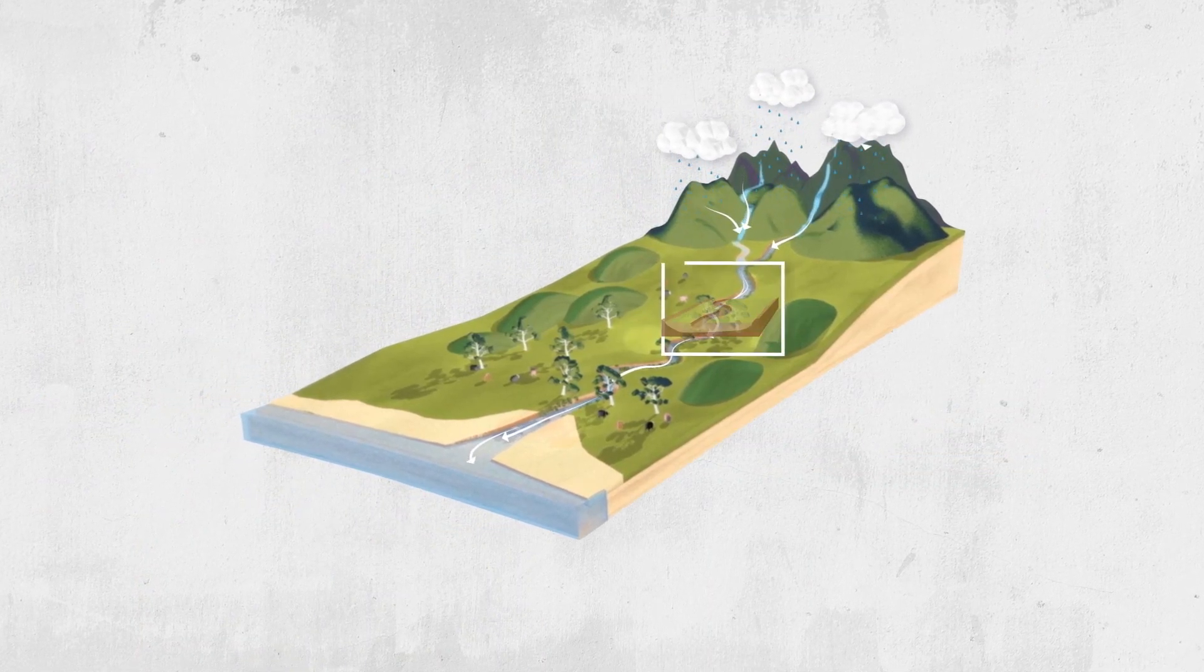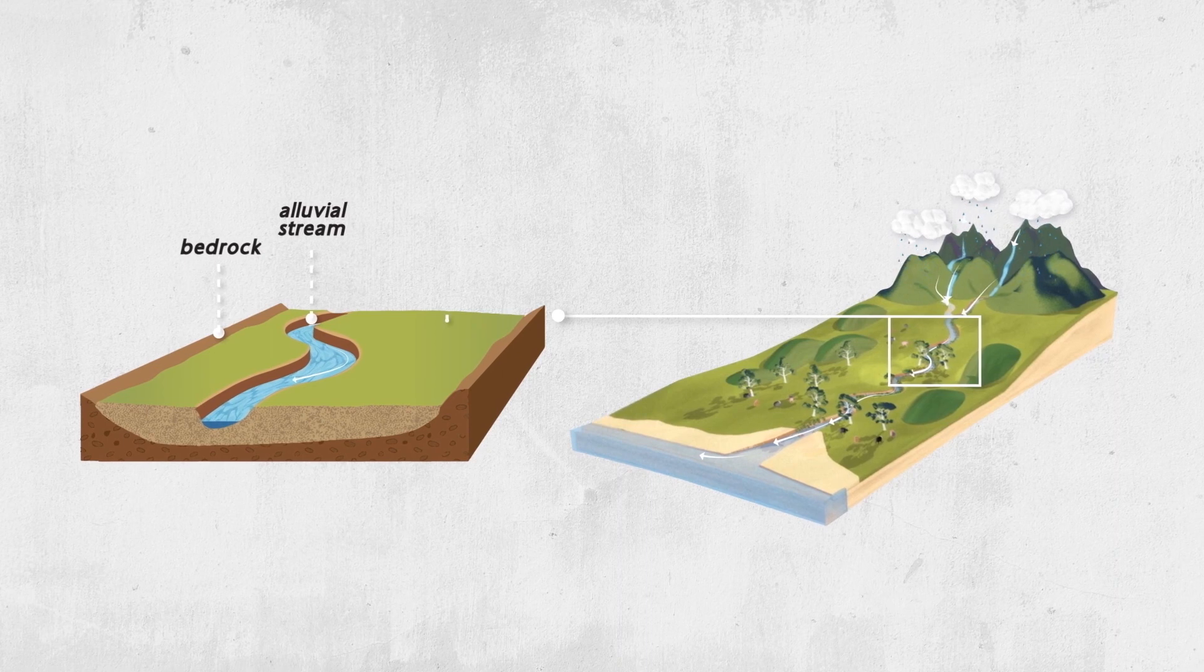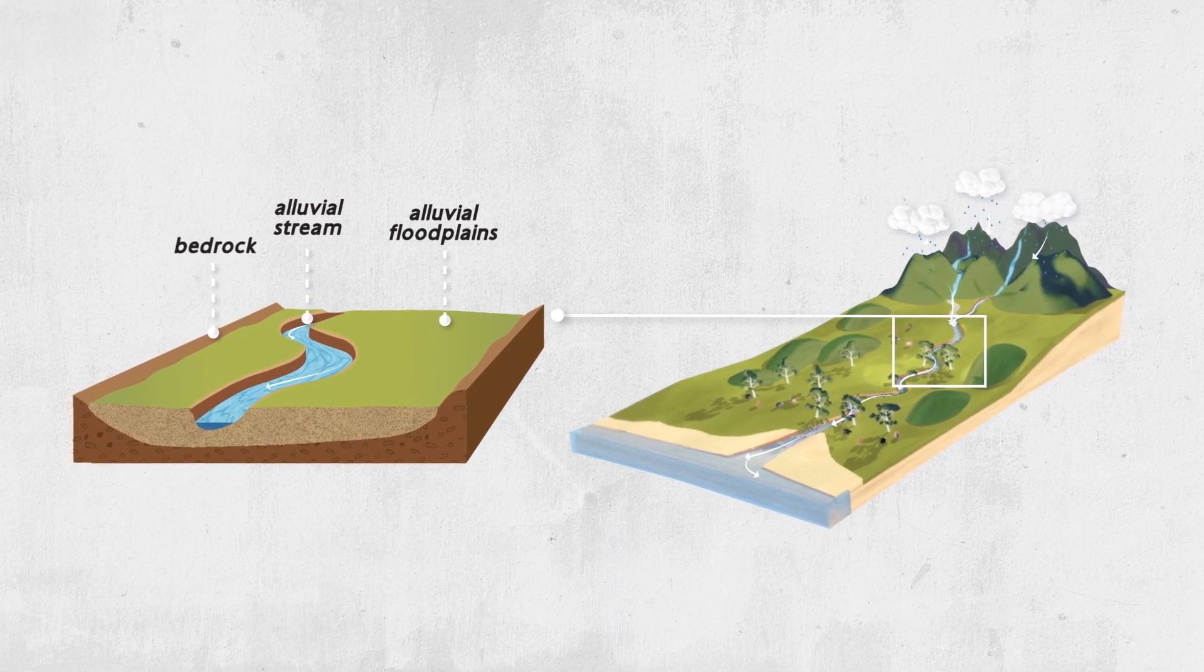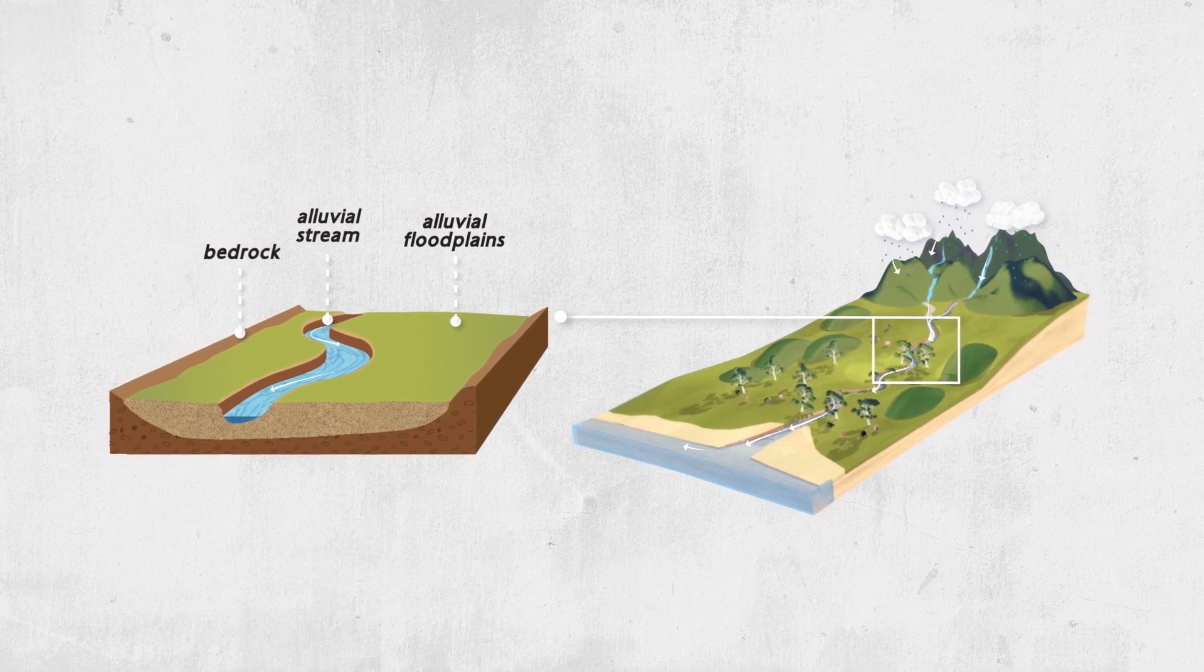As the slope of the catchment flattens, the sediment eroded from the upper catchment is deposited and alluvial floodplains form from the gravel, sands and silts. Streams that flow through this material are called alluvial streams.